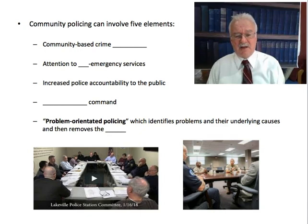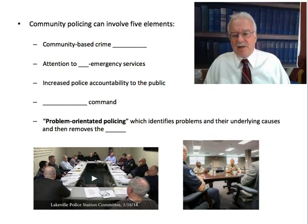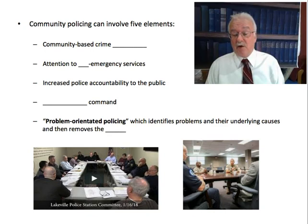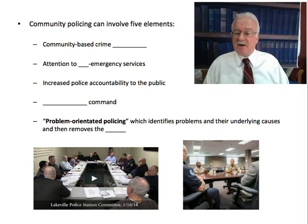Another element of community policing is increased police accountability to the public — the public needs to know what the police are doing and how they're performing. In the old days, the police would say 'we're the professionals, we'll take care of it.' In community policing, the public and police collaboratively identify problems, help find solutions, and may jointly try to solve them. The police are expected to gather and report crime statistics to the community — this accountability makes people work a lot harder.